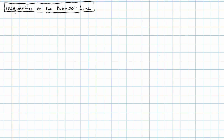One very useful way of understanding inequalities is as describing part of a number line. In order to understand inequalities in this way, we're going to want to be able to graph inequalities on a number line. So let me give you an example and show you how we graph it and why.